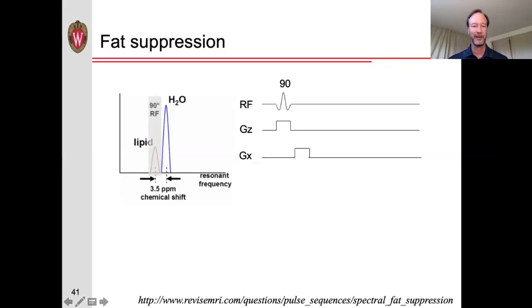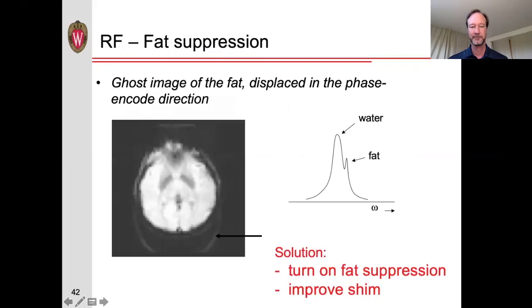Now, what effect that has is, remember, with MRI, we're trying to use the frequency of the spins as the position. We're using gradients to encode the frequencies. And so, as you can see here in this image, the fact that it's actually resonating at a different frequency causes a ghost of this object displaced a little bit.